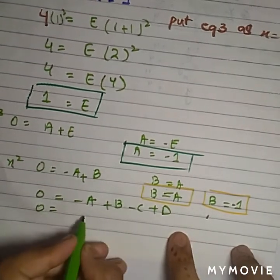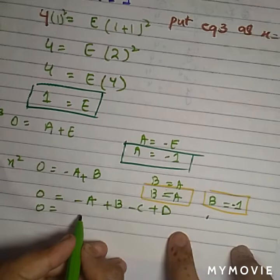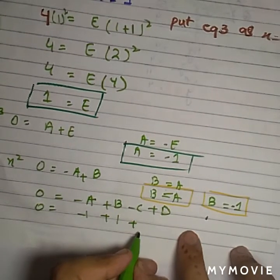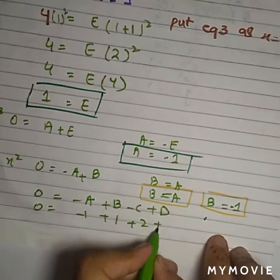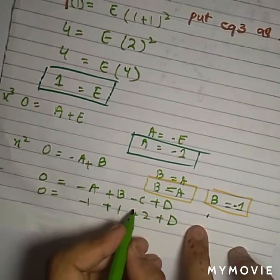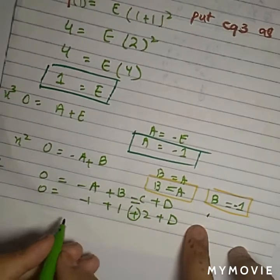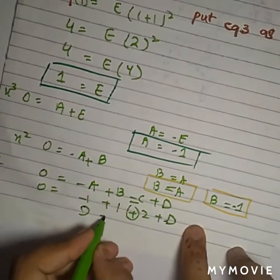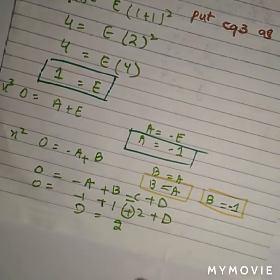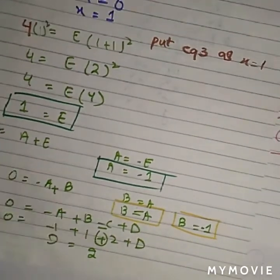B equals A. You can put B equals minus 1 because A is minus 1. Don't forget. These types of questions require your proper attention. That's why these types of questions are very important in the history of math, matrix math, and BSc level. Please remember it in your mind. Attention gives you proper marks. B equals minus 1.